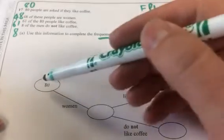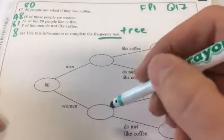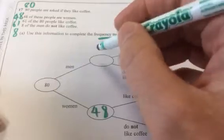My guest presenter is going to help me. How many were women? 48. 48 there. Leaving how many as men? 32.